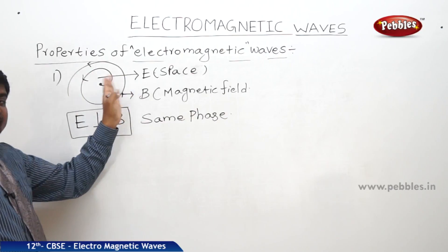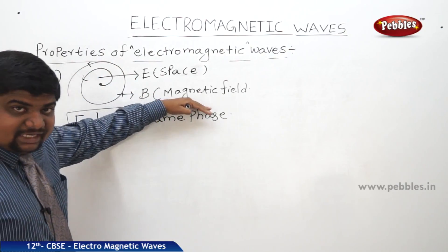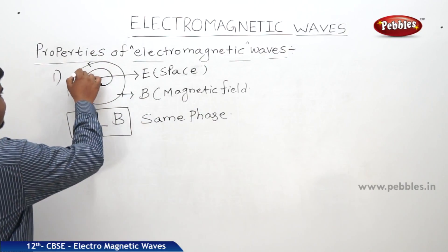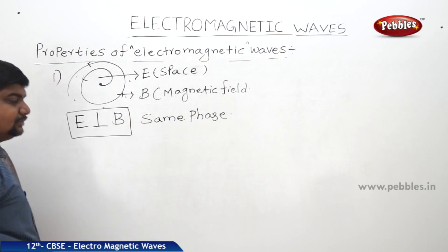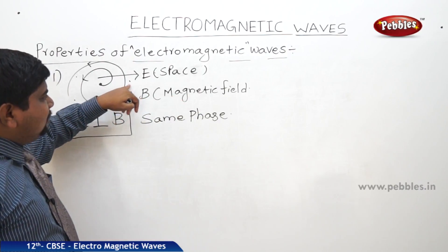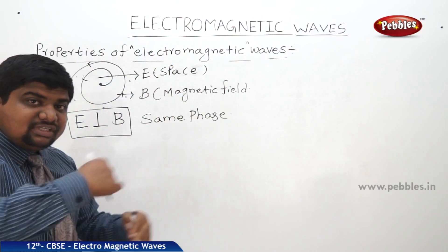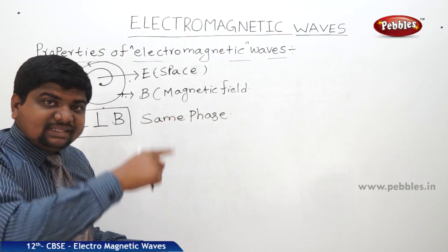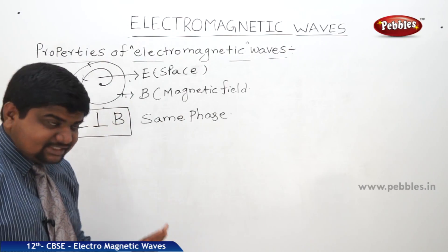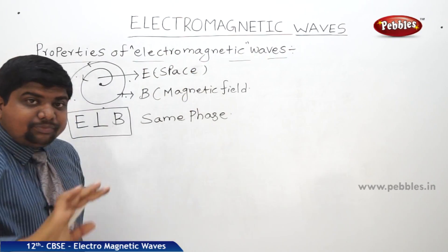The continuous revolution of the charged particle along the circular path creates the electric field within the space and the magnetic field component. These two will produce each other respectively while the charged particle is rotating with some frequency. Then electromagnetic waves are produced jointly.